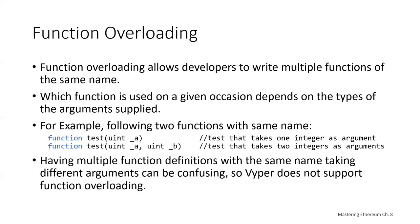Function overloading is another place where developers gain extra power but readability suffers. Function overloading allows developers to write multiple functions of the same name, where which function is called depends on the arguments supplied. For example, one version of test takes one unsigned integer and another version takes two unsigned integers. The compiler and EVM know which version was called based on how many arguments were passed in. Having multiple function definitions with the same name but different arguments can be confusing, so Viper does not support function overloading.